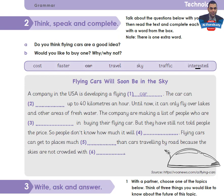Now let's read the words from the box: cost, faster, car, travel, sky, traffic, interested. The text: 'Flying cars will soon be in the sky. A company in the USA is developing a flying car. The car can travel up to 40 kilometers an hour. Until now it can only fly over lakes and other areas of fresh water. The company are making a list of people who are in [buying] their flying car but they have still not told people the price, so people don't know how much it will [cost]. Flying cars can get to places much [faster] than cars traveling by road because the skies are not crowded with [traffic].'